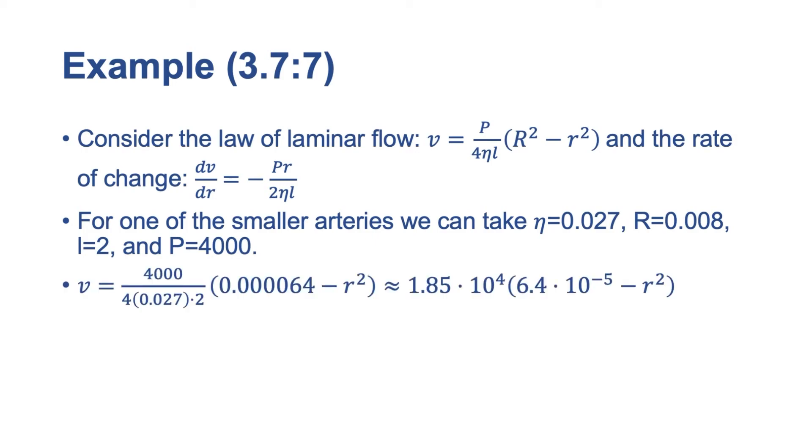So now we can solve this, and we can take v equals 4,000 over 4 times 0.027 times 2 times 0.0064 minus little r squared. That's approximately 1.85 times 10 to the fourth in scientific notation times 6.4 times 10 to the negative fifth minus r squared, little r squared. And if we simplify that, that will give us v of 0.002 equals 1.11 centimeters per second. And if we evaluate dv dr at r equals 0.002, that will give us negative 4,000 times 0.002 over 2 times 0.027 times 2. And that's approximately negative 74 centimeters per second per centimeter.